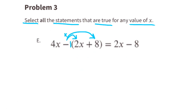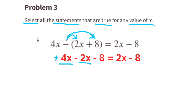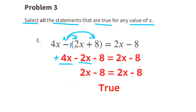Option E: a negative times a positive is a negative. So on the left side of the equal sign, we can rewrite this as 4x minus 2x minus 8. Combining the like terms, 4x minus 2x equals 2x, so the left side reads 2x minus 8. The right side also reads 2x minus 8. Since these are equal, this statement is true.